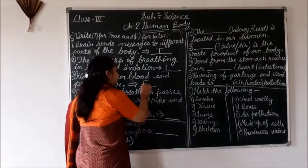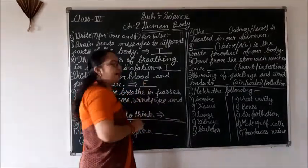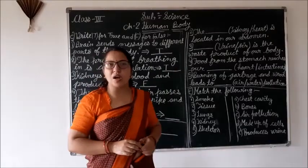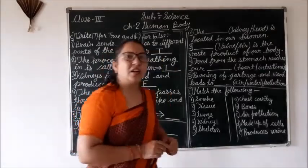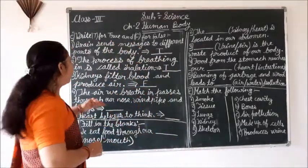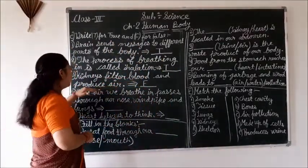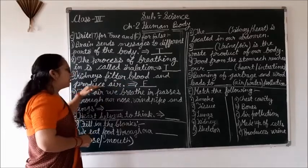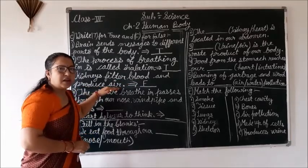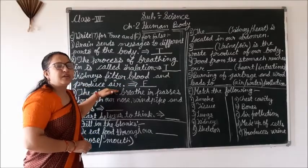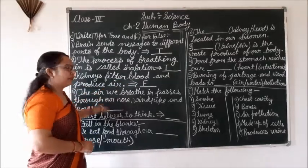So the answer is F — false. And the correct statement is: kidneys filter blood and produce urine, not air.